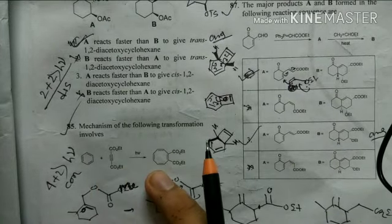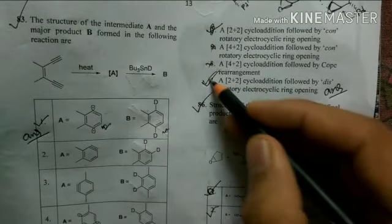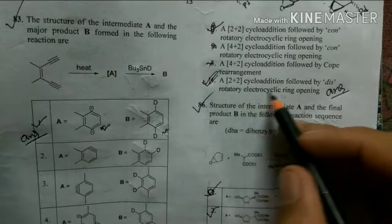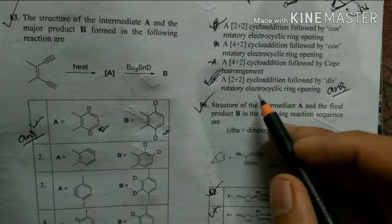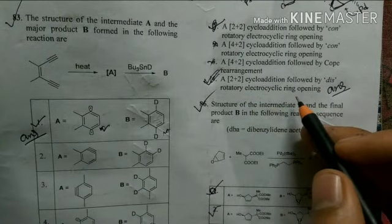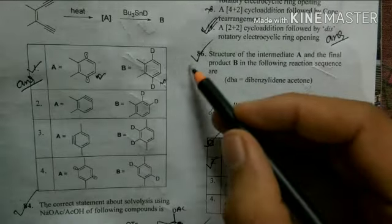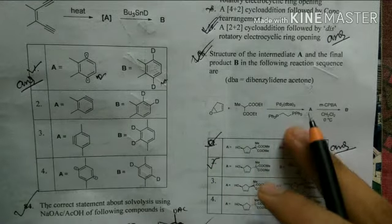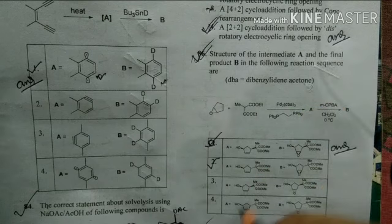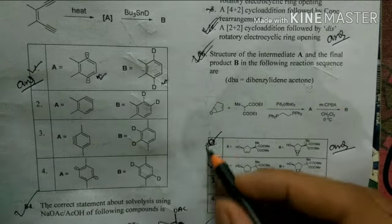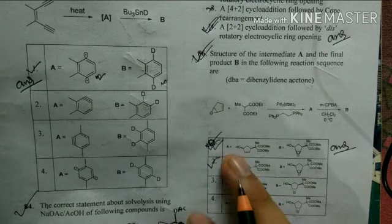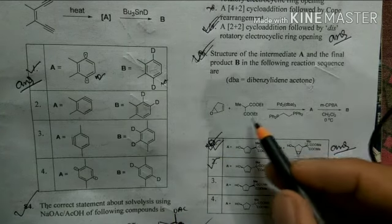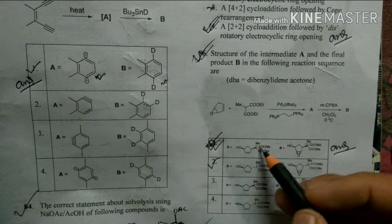This question involves a cycloaddition reaction followed by an electrocyclic ring-opening reaction. Option 4 — a [2+2] cycloaddition followed by a disrotatory electrocyclic ring opening — is the correct answer. After that is an important allylic substitution reaction with palladium catalysis, where option 1 is the correct answer.